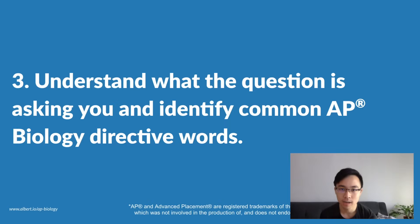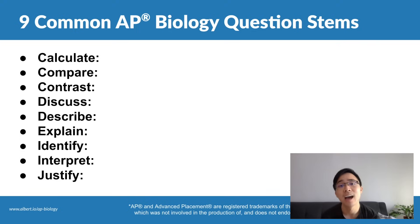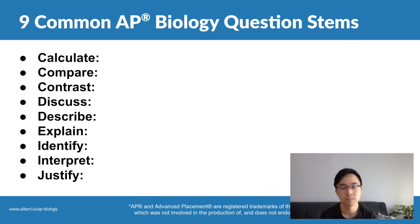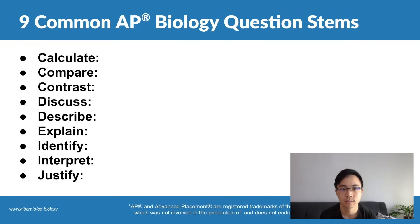The third step when it comes to writing effective AP Bio FRQs is to understand what the question is asking you and to identify the common directive words. Here are nine of the most common AP Biology directive words — we call these question stems. What these do is cue you in on what specifically you need to address in your response.